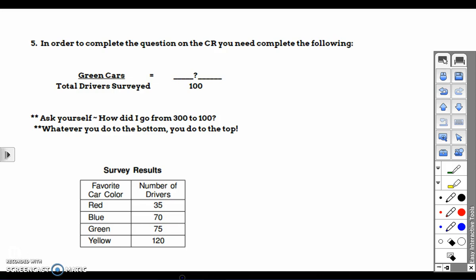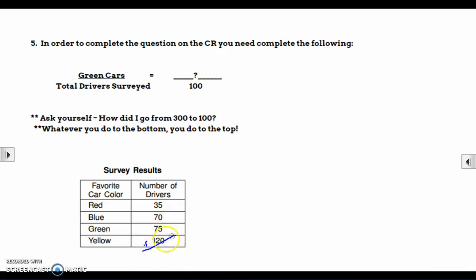And I'm going to look at the percent surveyed who like yellow cars. So if we add 35, 70, 75, 120, the total for all of those is actually 300. And we know that because it says 300 drivers were surveyed. I'm going to find the percent who like yellow cars, whose favorite color is yellow.